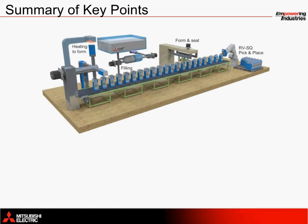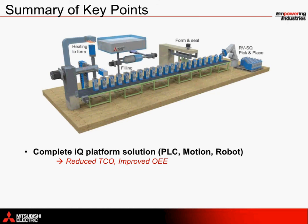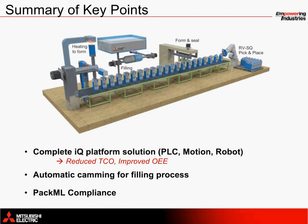In summary, the filling solution provided by Mitsubishi Electric highlights three key features that boost productivity and bring significant advantages and benefits to the end user. The complete IQ Platform solution integrates a PLC, motion controller, and robot CPU for reduced total cost of ownership and improved overall equipment effectiveness. The automatic camming for the filling process keeps the system in sync as well as ensures clean operation for reduced waste material. Compliance with PackML provides a convenient template for packaging manufacturers in the food and beverage industry.